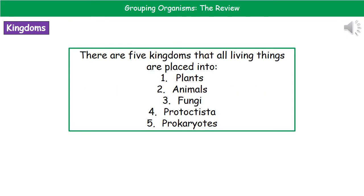When we look at how we've classified everything on Earth, we come down to our first stage of classification, which are the kingdoms. Every living thing on Earth can be split up into one of five kingdoms: plants, animals, fungi, protoctista, and the prokaryotes.